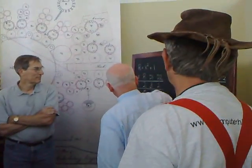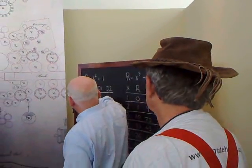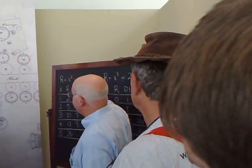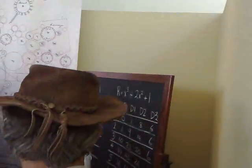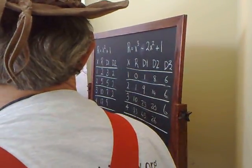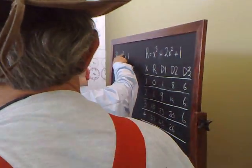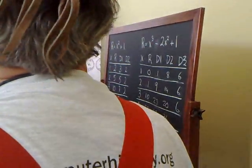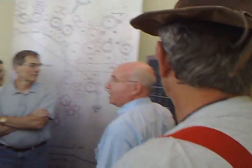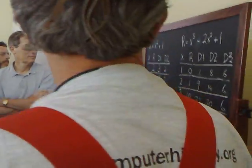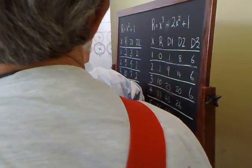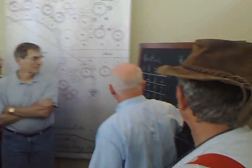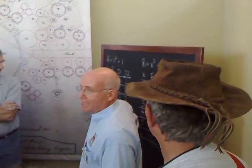Now I subtract: 10 minus 5 is 5, that goes in this difference column. 5 minus 2 is 3, goes in this difference column. That's the first difference. Second difference is 5 minus 3 is 2, 7 minus 5 is 2. So you can see that the second difference column is a constant 2. From now on, I only have to add. I want to know the solution for x equals 4. I go 2 and 5 is 7, 7 and 10 is 17. I want the solution for x equals 5: 2 plus 7 is 9, 9 and 17 is 26. I just have to keep adding. That's all the machine does.